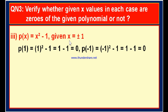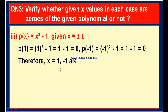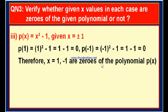Similarly, substitute x is equal to minus 1: x square means minus 1 whole square minus 1. Minus 1 whole square is plus 1; 1 minus 1 is also 0. So if we substitute x is equal to plus 1, we got 0, and if we substitute x is equal to minus 1, again we got 0. In both cases, the value of the polynomial is 0. Therefore, both x is equal to plus 1 and x is equal to minus 1 are zeros of the polynomial P of x.